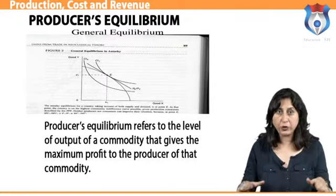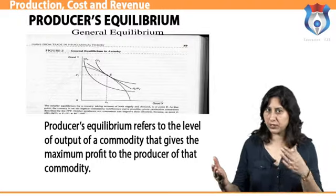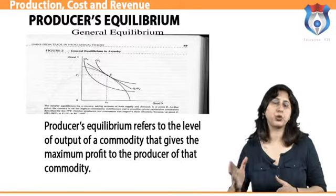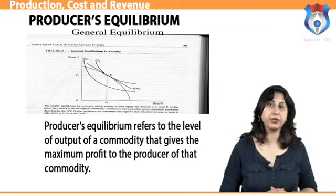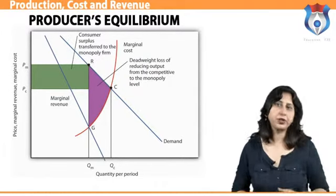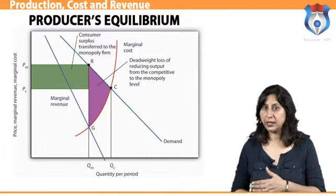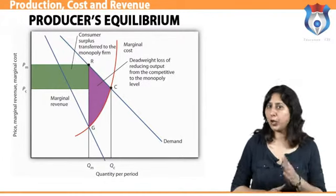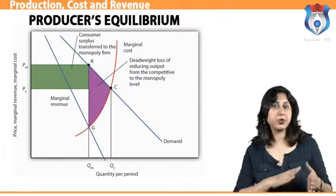Producer's equilibrium refers to the level of output of a commodity that gives the maximum profit to the producer. Profit equals total revenue less total cost; therefore the output level at which TR minus TC is maximum is called the equilibrium output level. There are two approaches to achieve producer's equilibrium. Under the TR minus TC approach, two conditions must hold: TR minus TC is maximum, and profits fall if one more unit of output is produced. Under the MC equals MR approach, two conditions are: MC equals MR, and MC is greater than MR after the MC equals MR output level.